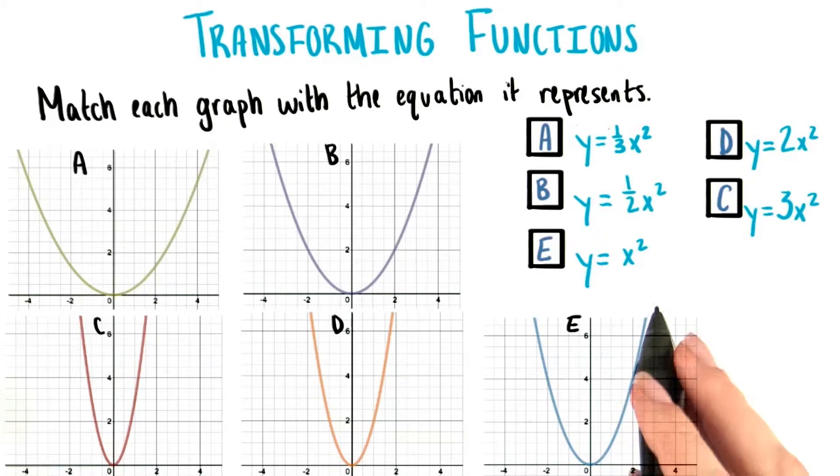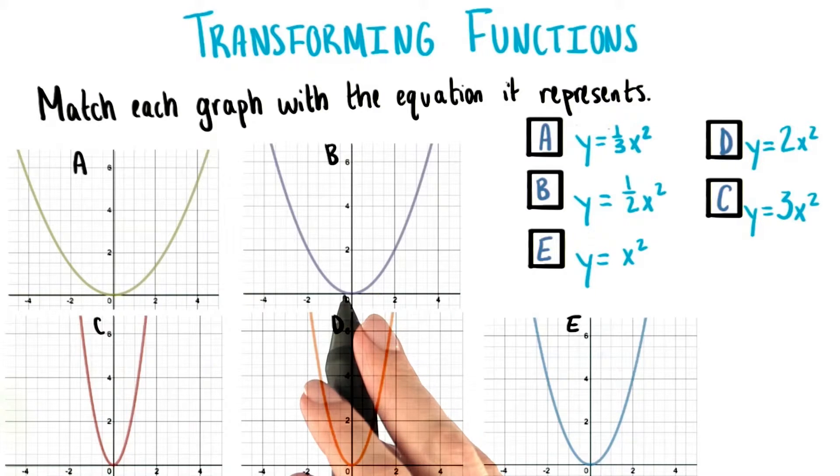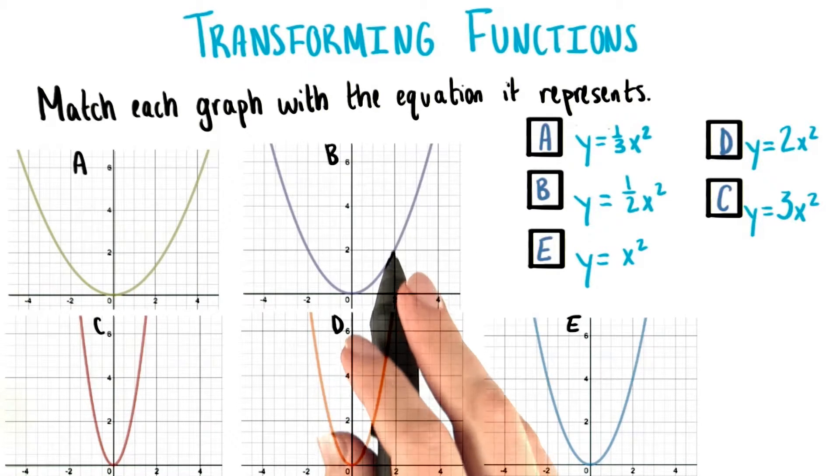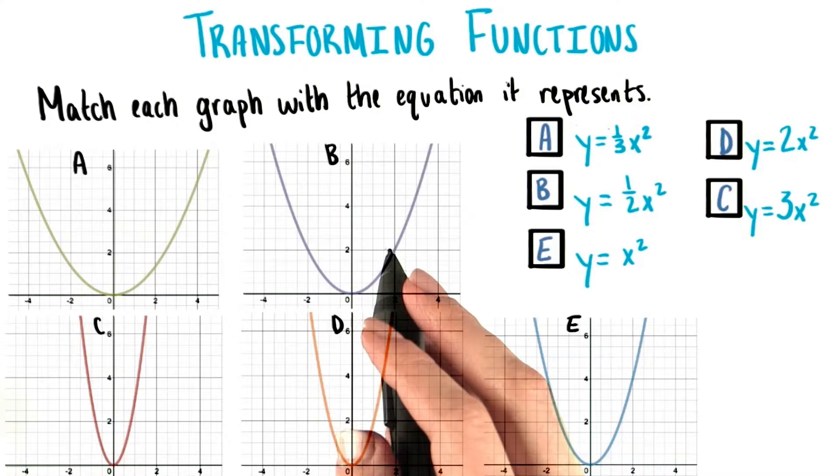While we see the point 2 comma 4 here, on graph B we can see that when the x coordinate is 2, the y coordinate is not all the way up at 4. It's only halfway as tall.